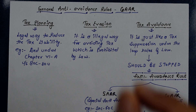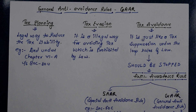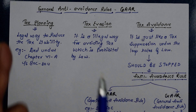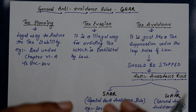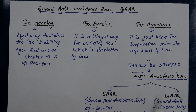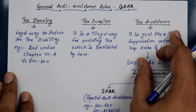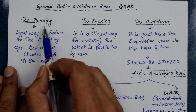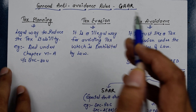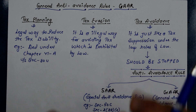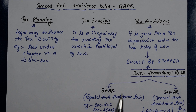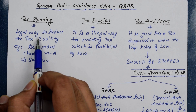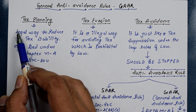Tax planning is a legal way where you can reduce your tax liability. For example, if you invest in government schemes, if you have a home loan, if you have school fees — these give you deductions. This is a legal way you can reduce your income tax liability. That is called tax planning.